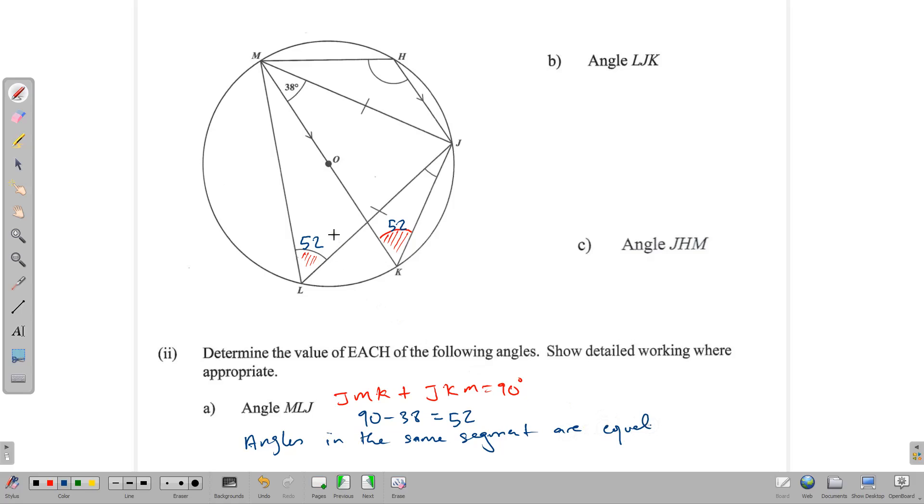And we can use the fact that angles in the same segment are equal to each other. Notice the line here. If we should just draw this line here, then you'll see that here is one segment of the circle and there is the other segment. Both of these angles are drawn in the same segment.